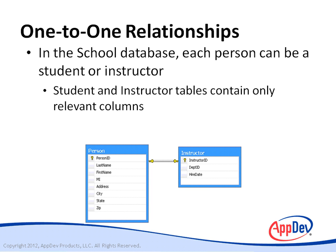Each record in the person table might or might not have one matching record in the instructor table, but each record in the instructor table would have exactly one matching record in the person table. Instructor ID is both a primary key and a foreign key, because every instructor row has to have a matching person row. However, person ID is only a primary key and not a foreign key, because not every person row has to match an instructor row — people might be students or staff as well.